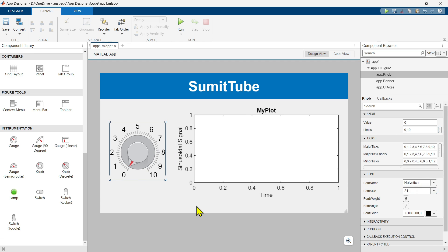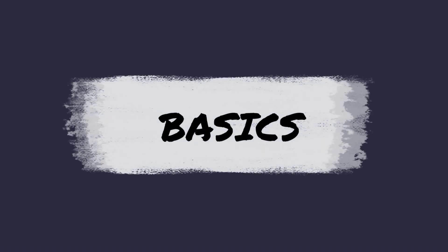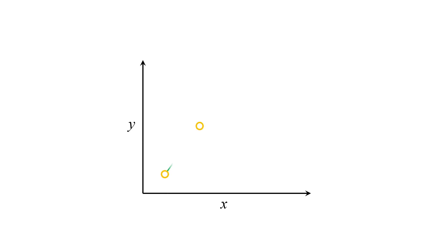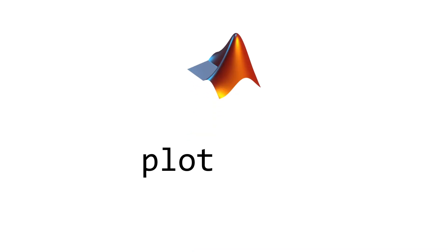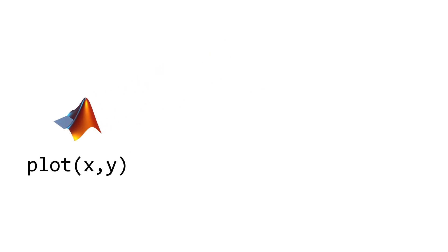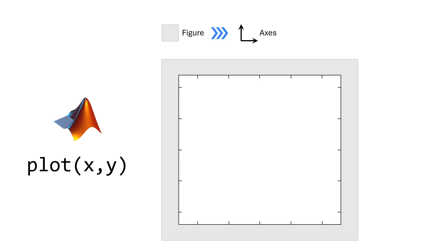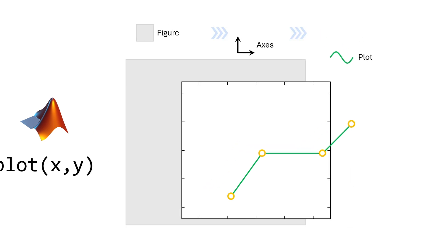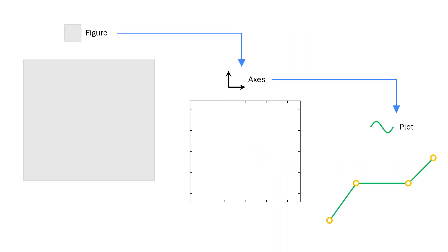Let's understand some basics of plotting. We have X and Y datasets — we place them and then call the plot command to get the plot. When you use plot(X, Y) in regular MATLAB, a chain of processes happens: MATLAB first creates a figure, then creates axes inside this figure, and then puts the plot inside those axes, automatically creating the hierarchy. The figure holds the axes, and the axes hold the plot.